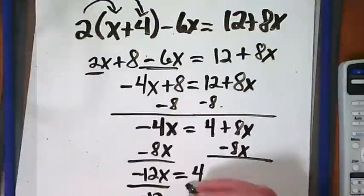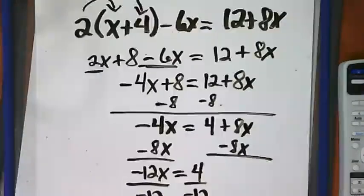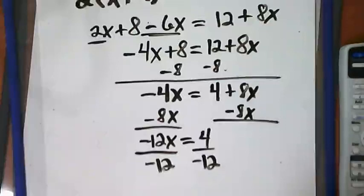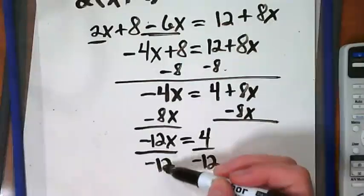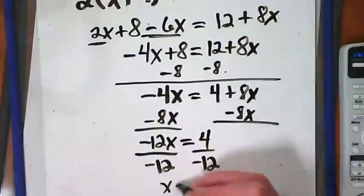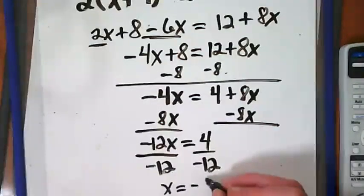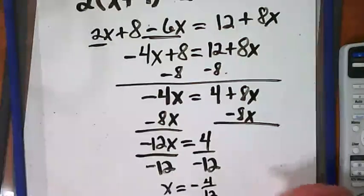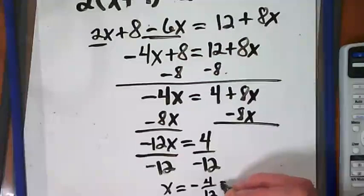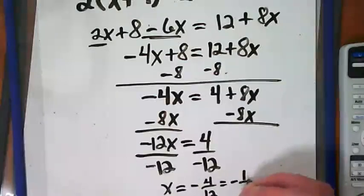Divide by negative 12. We're ending up with another fraction answer. Negative 12 divided by negative 12 is positive invisible 1. Equals negative 4 over 12, which could be reduced to what? Negative 1 third.